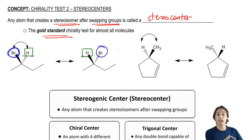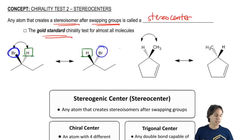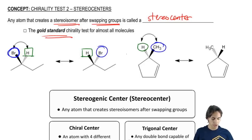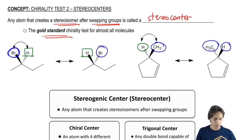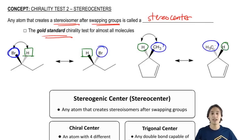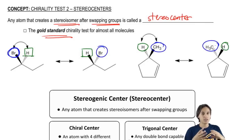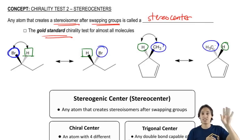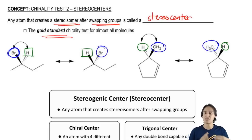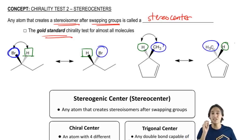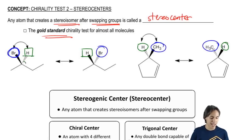Another example would be this ring. This ring here has a methyl in the front and an H in the back. After I swap those two groups, the methyl goes to the back and the H goes to the front. Those are also going to be different molecules because rings can't rotate easily — so if it's on the front, it's going to stay on the front; if it's on the back, it's going to stay on the back. So this would also be an example of a stereocenter. The stereocenter itself is the atom or the group of atoms that it's attached to.